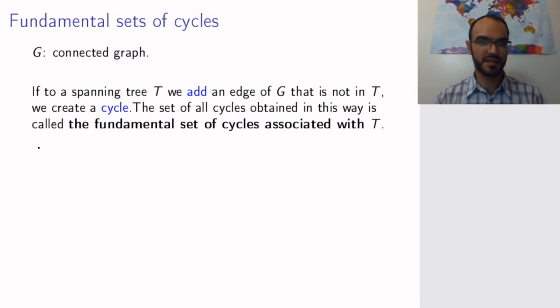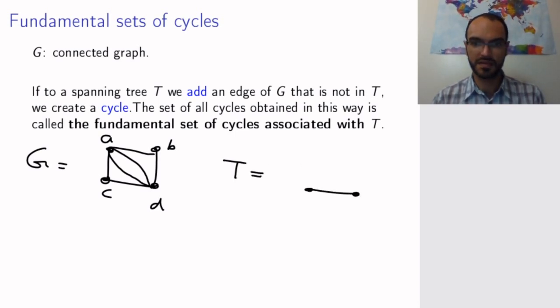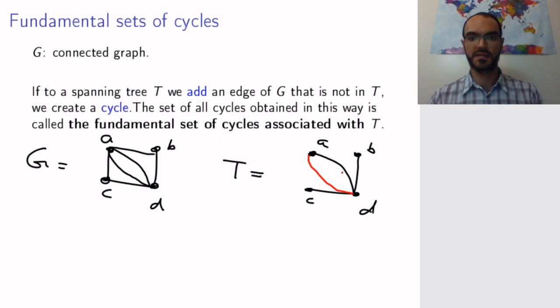The set of all these cycles is called a fundamental set of cycles associated with the tree. So, let's look at a more detailed example. Assume we have our graph G that looks like this. And let's call the vertices A, B, C, and D. Then one of the spanning trees, if I remember correctly, that we constructed the last time we looked at this particular graph, was this one. So, this is a spanning tree of the graph. Now, which edges can I add? Well, I can add this edge. This creates a cycle.